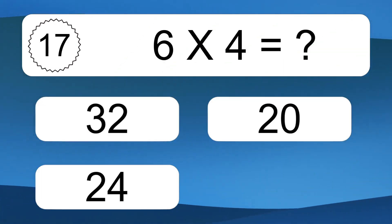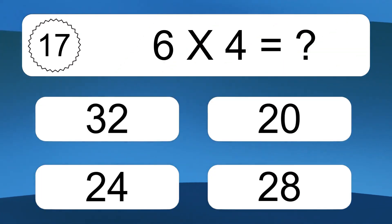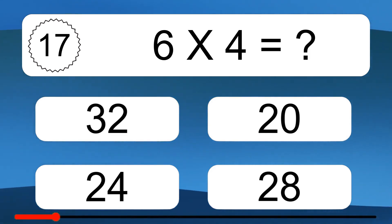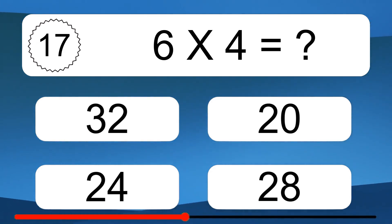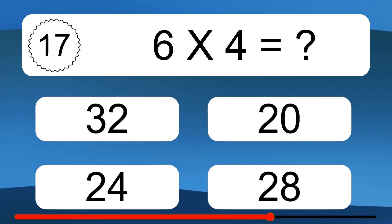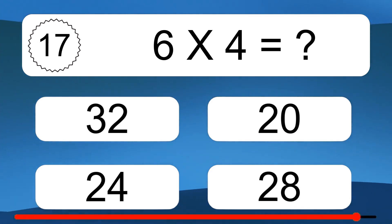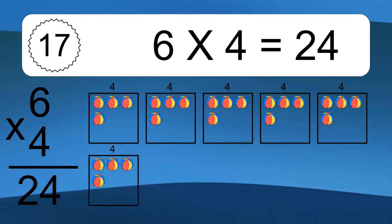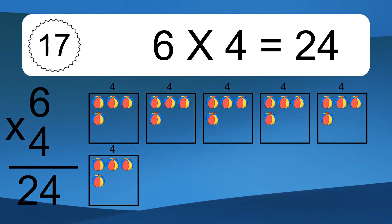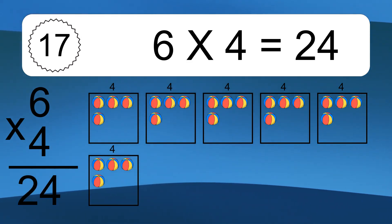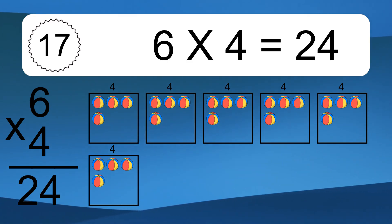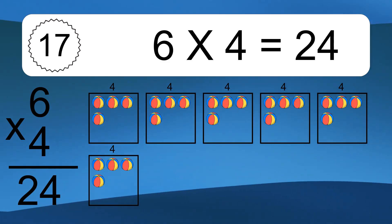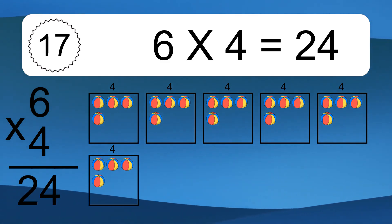6 times 4 equals what? 6 times 4 equals 24. We have 6 boxes, and each box has 4 colorful balls inside. If you count all the balls in all the boxes together, you will have 6 times 4 balls. This equals 24 balls.